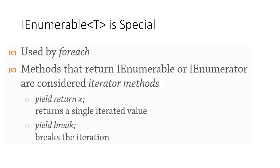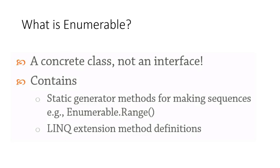IEnumerable is used by foreach — that's how foreach is able to go through the entire array, list, or whatever the enumerable object is. Methods that return IEnumerable or IEnumerator are considered iterator methods. We use this yield statement, which returns the next single iterated value. Enumerable is a concrete class, not an interface, and it has a lot of static generator methods for making sequences. We're going to use the Enumerable.Range method quite a bit.